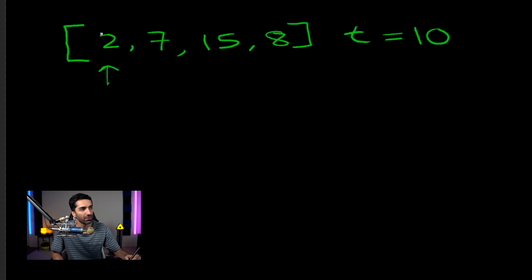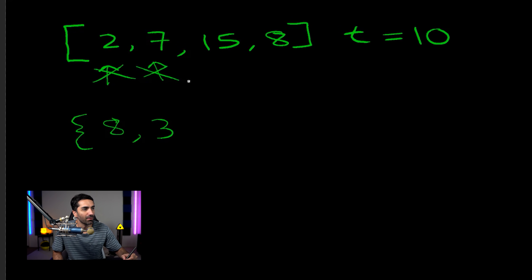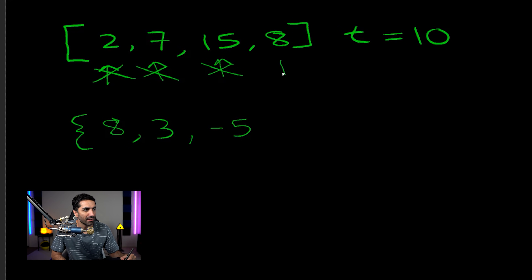We'll assume the interviewer wants something more optimized. Another strategy is: we loop through the array, and when we get to 2, we know we need an 8 somewhere to reach our target of 10. So we use additional memory — a set — to keep track of what we've already seen. We have a 2; we know we need to see an 8 at some point, so we save that in the set. We move to 7; we need a 3 to get to 10 — is there a 3 in the set? No, but there might be later, so we save it. We move to 15; we would have needed a negative 5 — not in the set, so we add that. We move to 8; we check the set — are we looking for an 8? Yes, we are. That means we have a pair that equals our target of 10, so we return true.